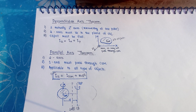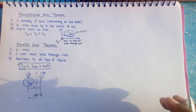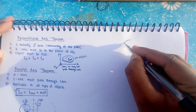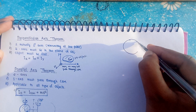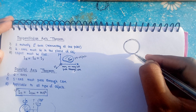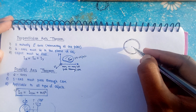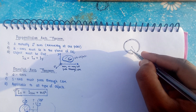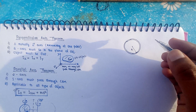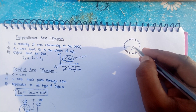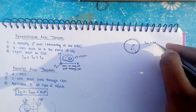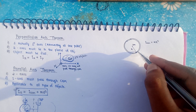Let's take the example of a ring. This is a ring with center of mass at the center and radius R. If I calculate the moment of inertia about the axis passing through the center of mass and perpendicular to the plane — the z-axis — it will be M R squared, because every small mass element is at the same distance R from the axis.